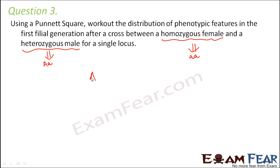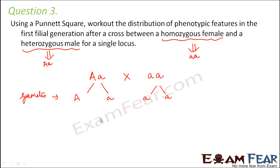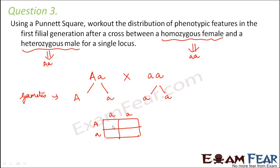We have to do a cross between these two: capital A small a and small a small a. The possible gametes produced are capital A and small a for one parent, and small a and small a for the other. Now, to prepare a Punnett square, we put the gametes on the topmost row and on the leftmost column.